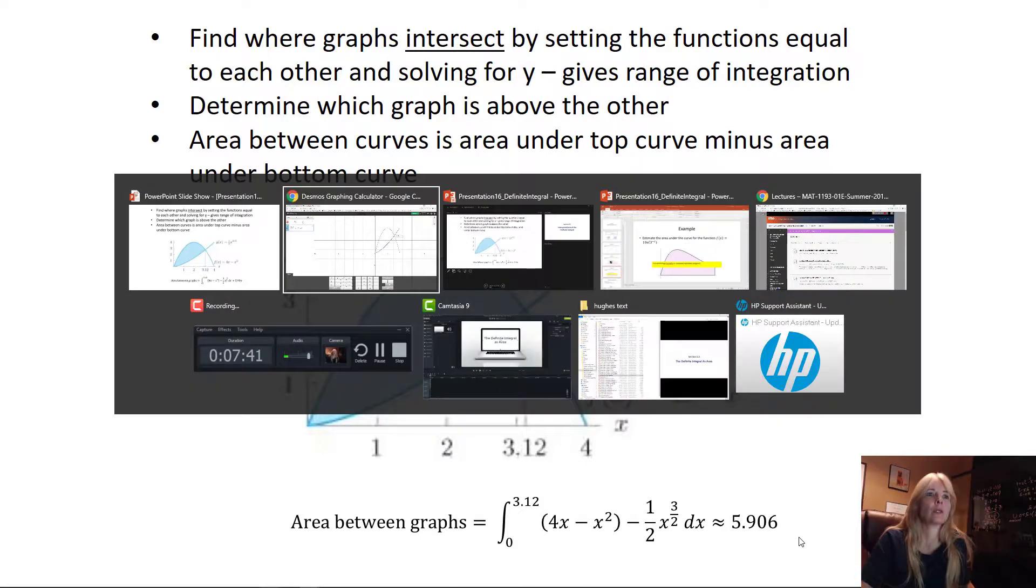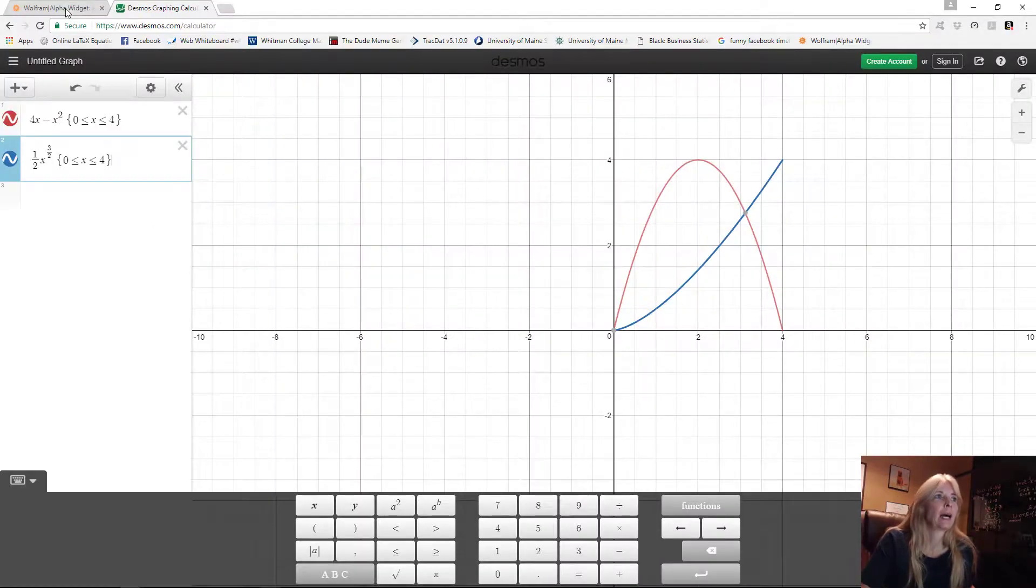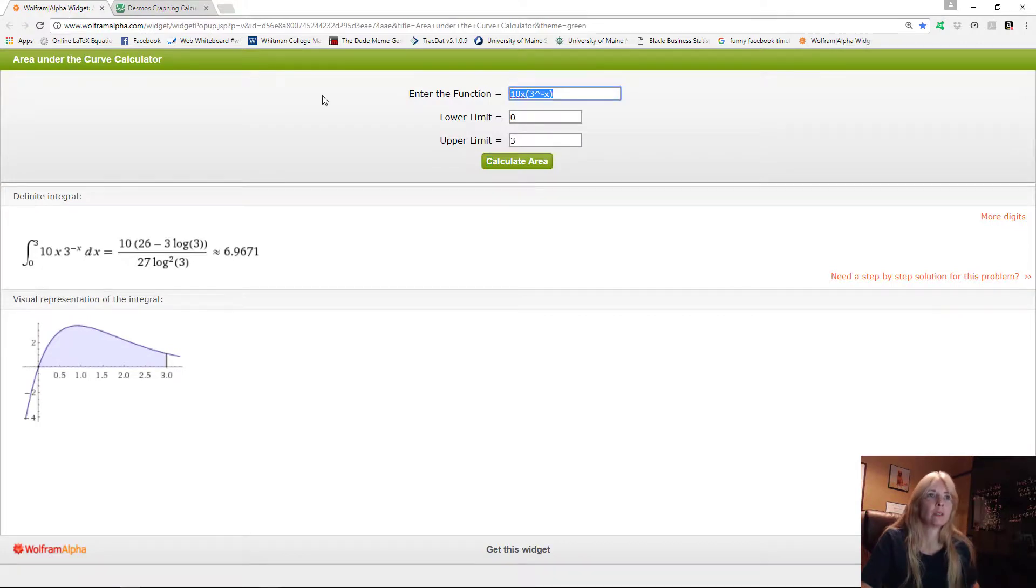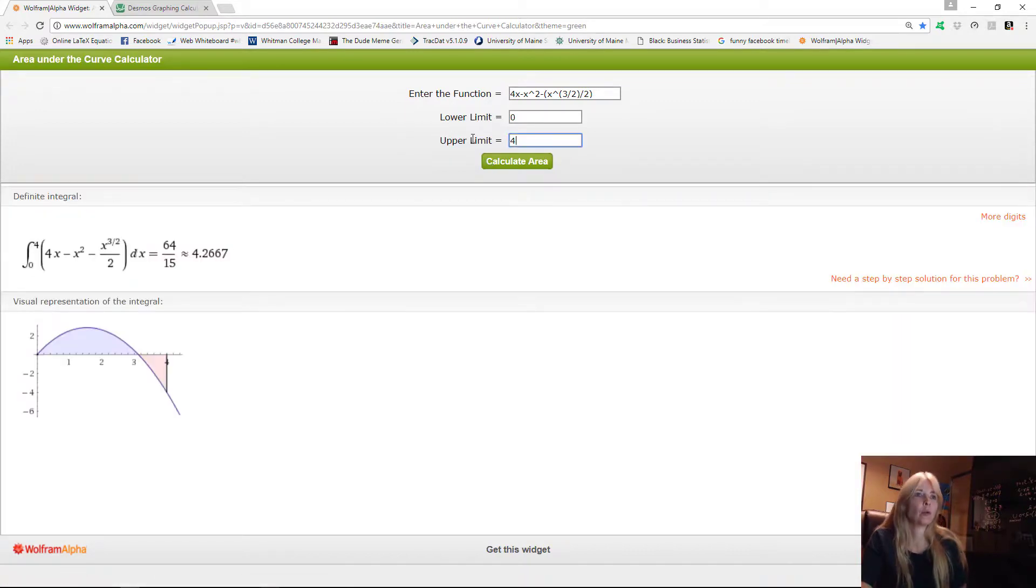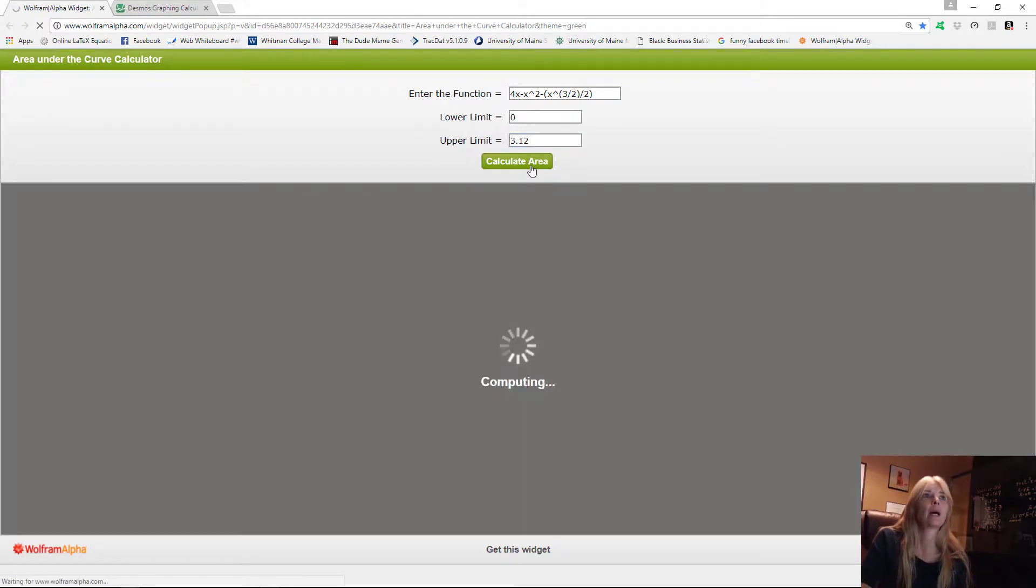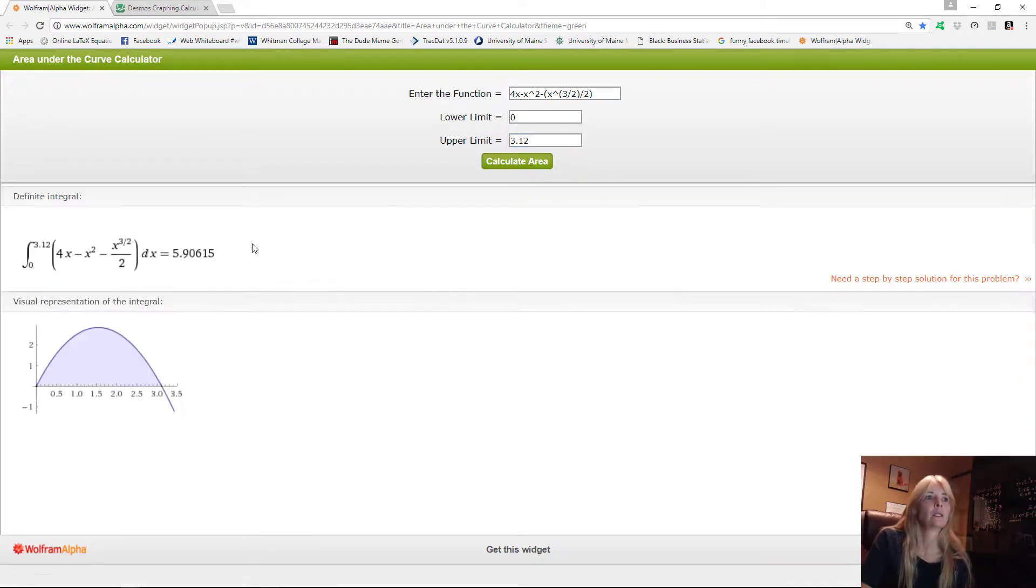How in the world did I get that? Well, I go back here to my Wolfram Alpha. I put in 4x - x² minus x to the 3/2 over 2, and from 0 to—oh, I'm sorry, not 0 to 4—0 to my intersection, which was 3.12. And I calculate my area to get that 5.906.